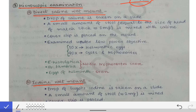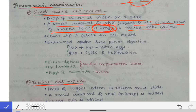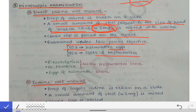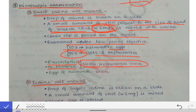In the direct saline wet mount, a drop of saline is placed on a slide and a small amount of stool — equal to the size of the head of a matchstick, about two milligrams — is mixed with it. A coverslip is placed and examined under low power. Eggs can be seen at 10x magnification; cysts and trophozoites require 40x. Organisms detectable include Entamoeba histolytica and Giardia lamblia as motile trophozoites, and helminth eggs.